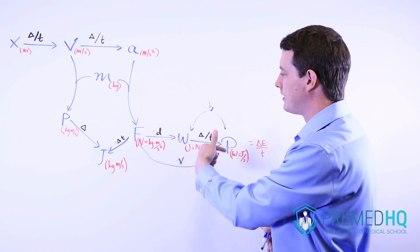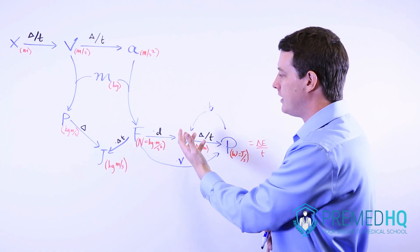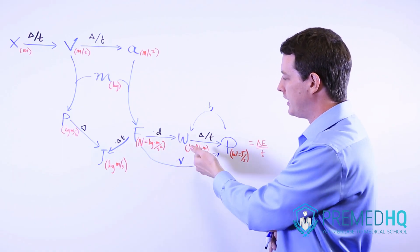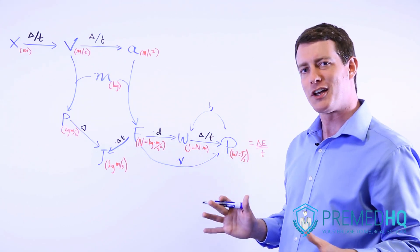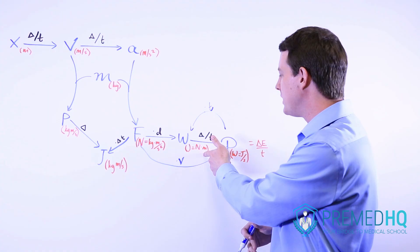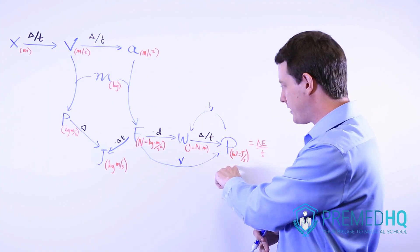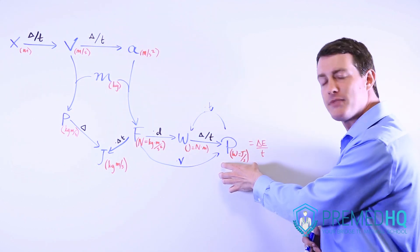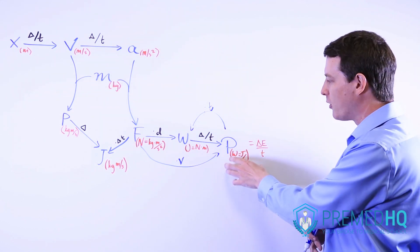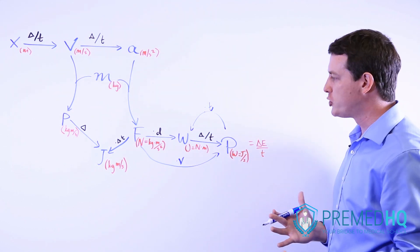Force times distance will give you work and a joule is essentially a Newton meter. Remember that work is a form of energy and all forms of energy are measured in joules and joules are simply Newton meters. Dividing joules by second is what we do here. We take work, divide that by time, and that gives us power. And power is measured in watts, which are joules per second.